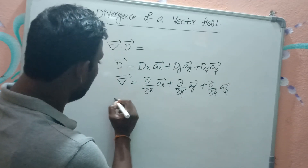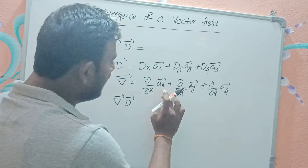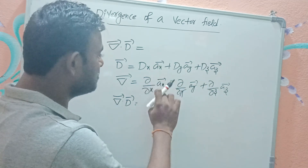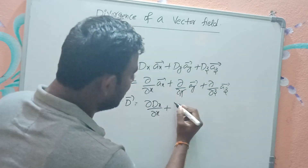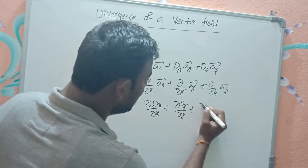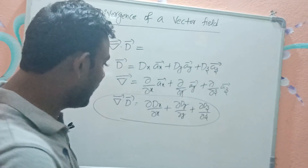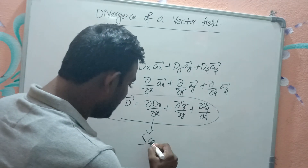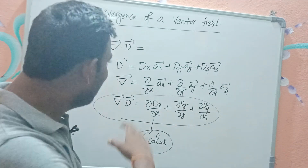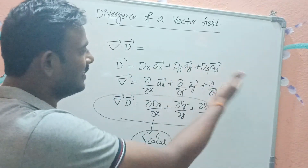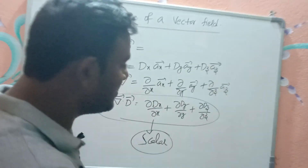Taking the dot product del-bar dot D-bar, since ax·ax=1 and ax·ay=0, you multiply only the corresponding components, giving ∂Dx/∂x + ∂Dy/∂y + ∂Dz/∂z. Notice this is a scalar result — the divergence of a vector field gives a scalar field, unlike the gradient of a scalar function which yields a vector.